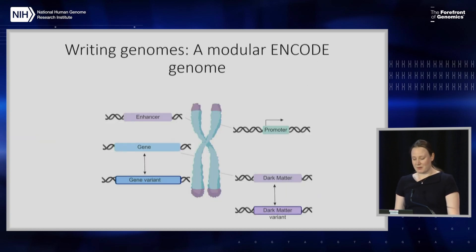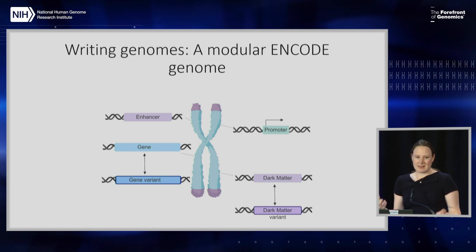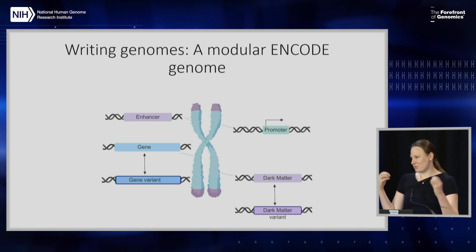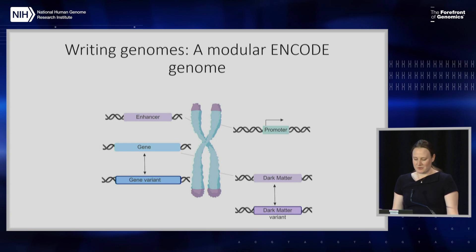As a community, we need to decide if synthesizing genomes is something we want to do. For example, could you build a chromosome in which every ENCODE-annotated element can be switched out at ease? You could switch out a gene for a different gene variant, some elusive element, some transposable element, or dark matter for another dark matter variant. If every spot was switchable, you'd be able to start asking questions about diseases where many variants all play a role — looking at variation in multiple enhancer and gene locations simultaneously.